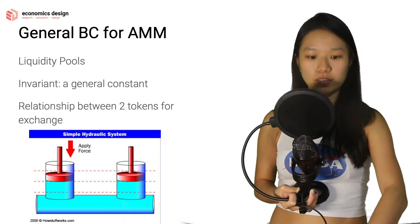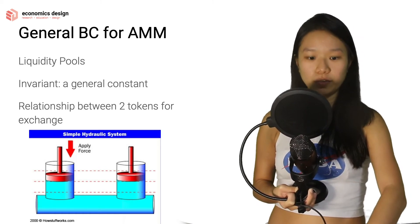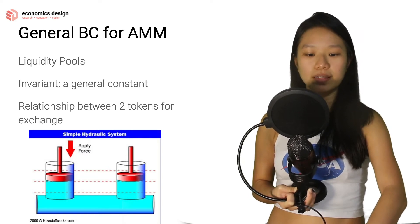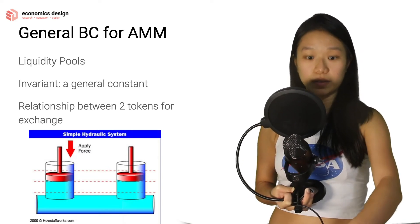We're reducing the token on the left side so now the left vault goes down and this means that there will be an increase in the right side. It goes up.